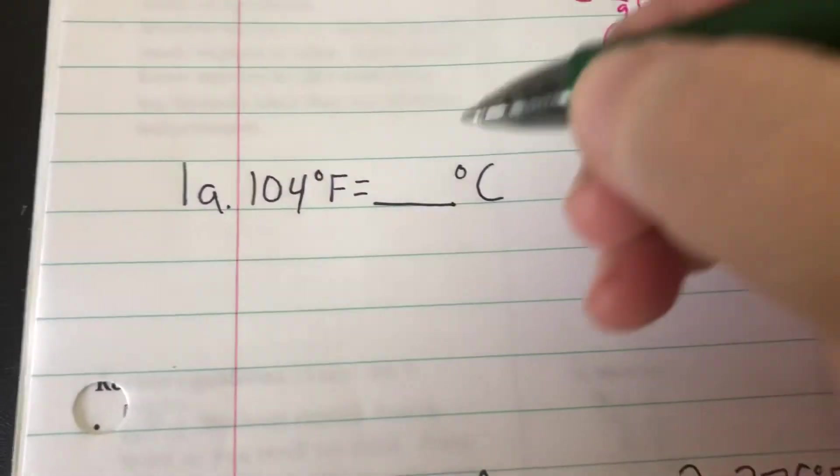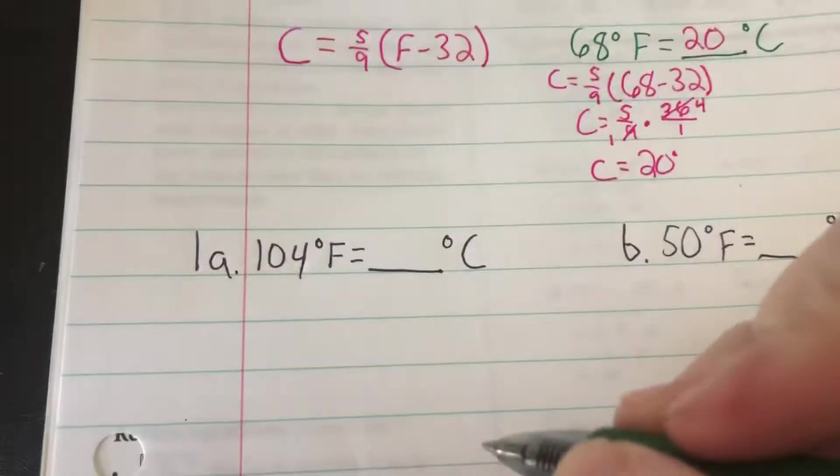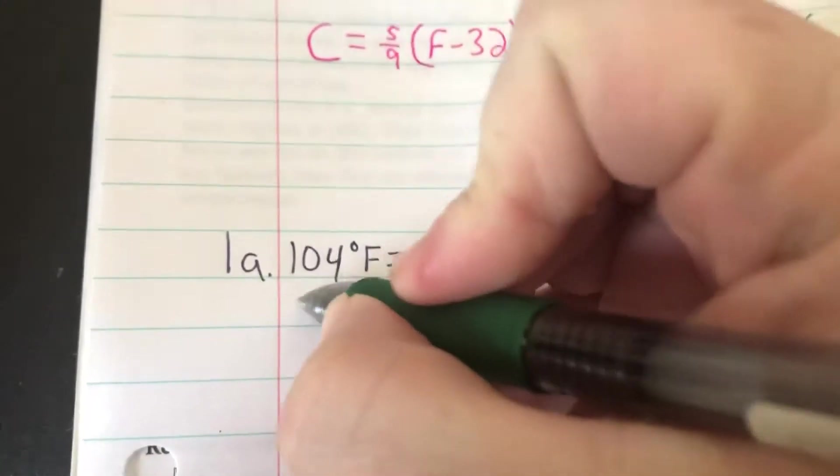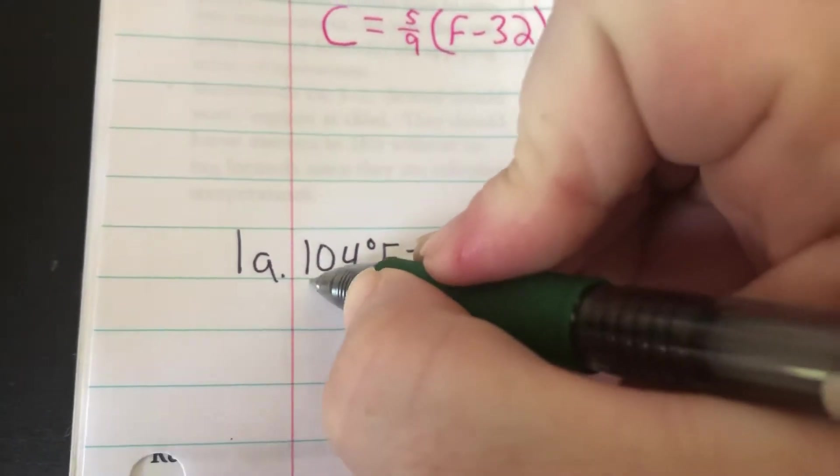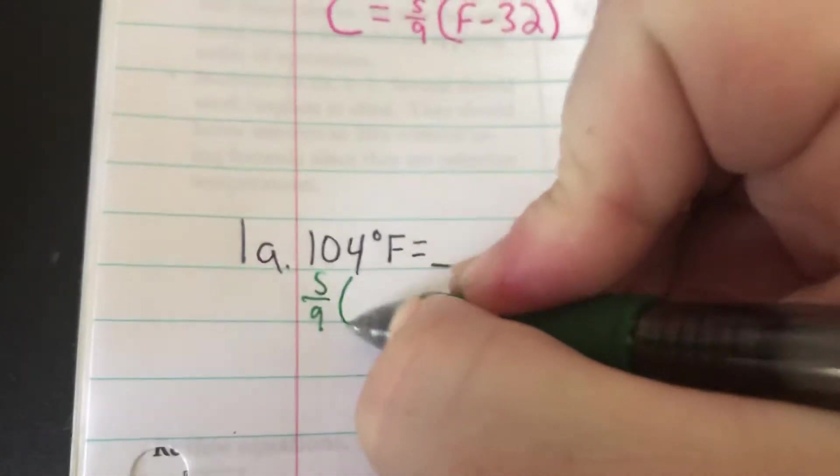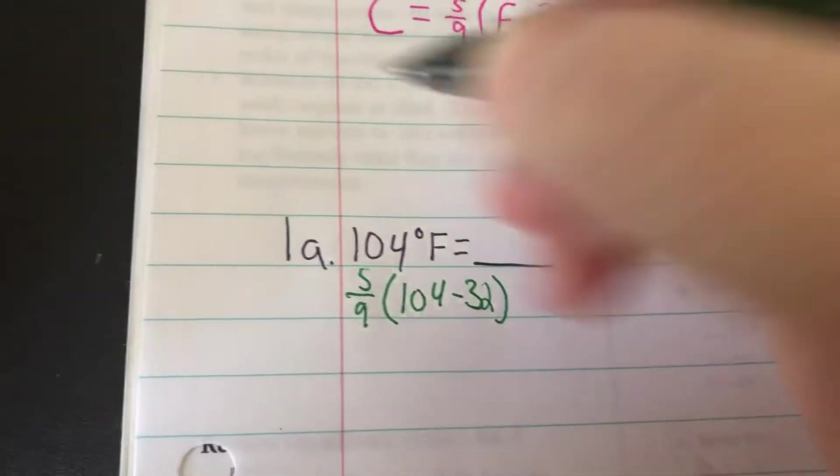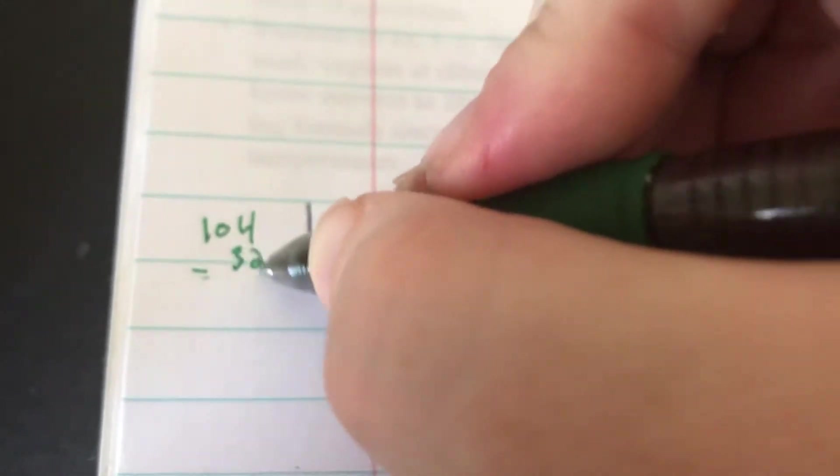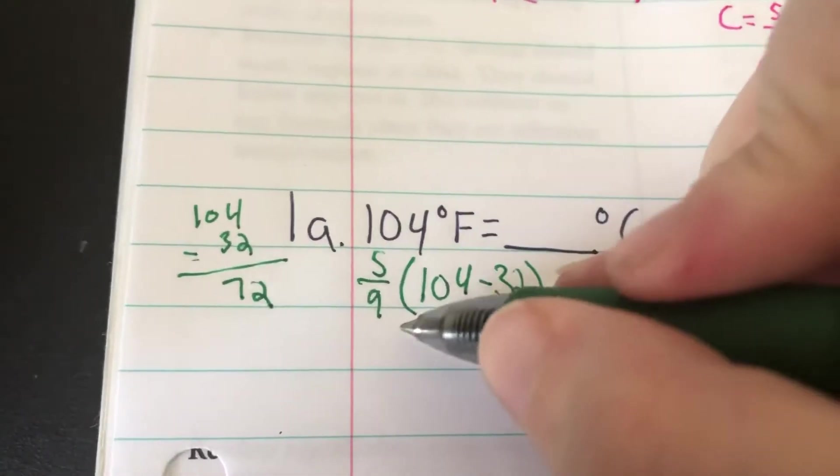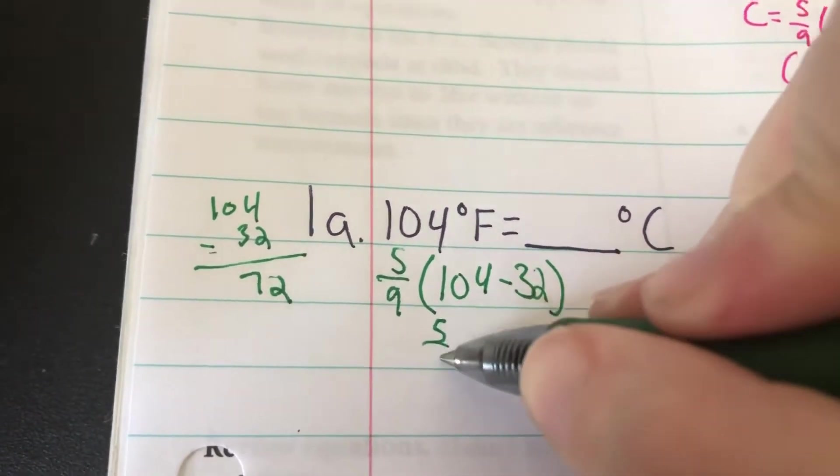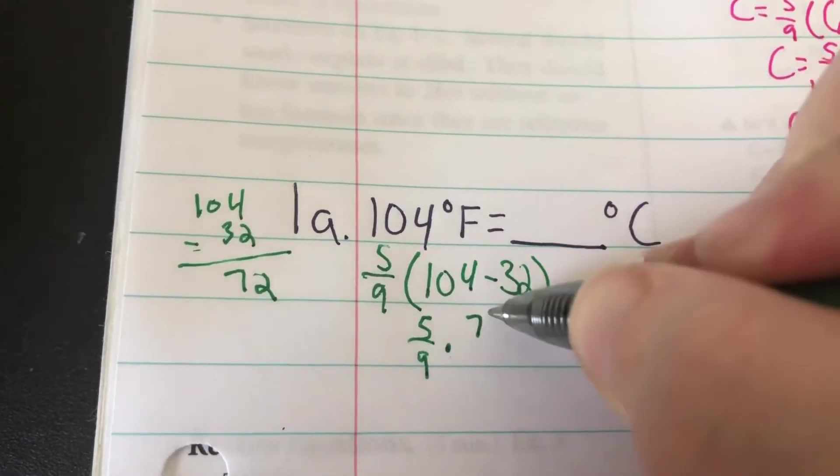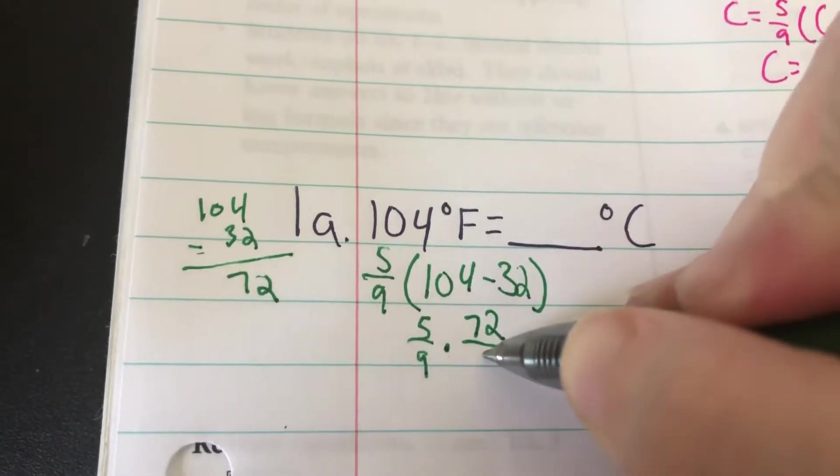Let's look at 1a. We have 104 degrees and we want to get that to Celsius. So it would be 5/9 times 104 minus 32. 104 minus 32: 4 minus 2 is 2, 10 minus 3 is 7.